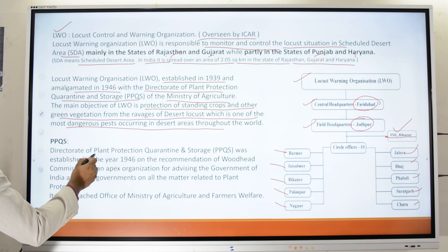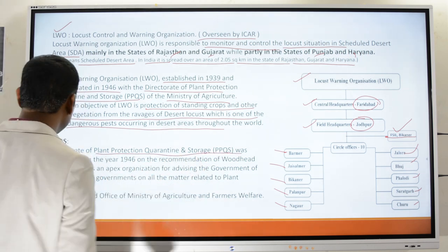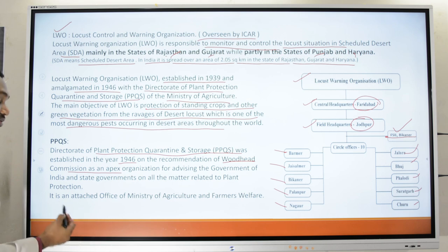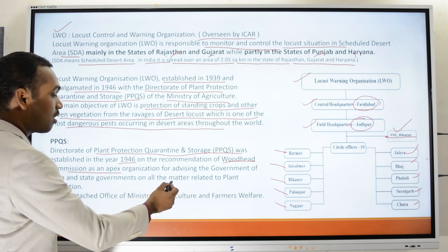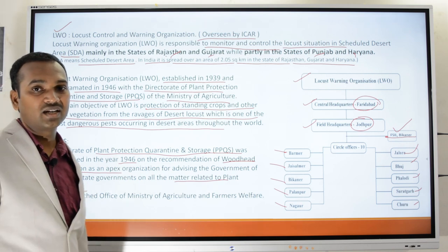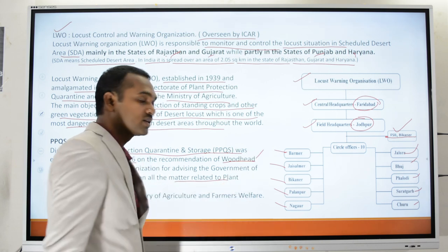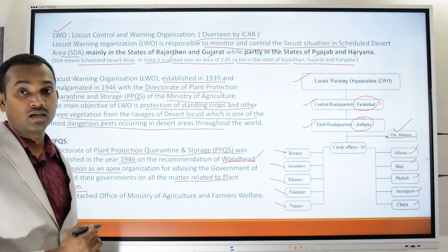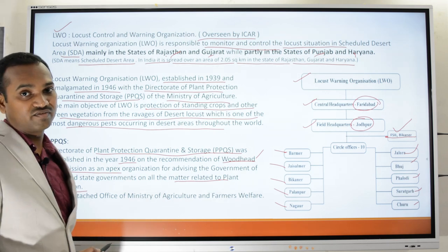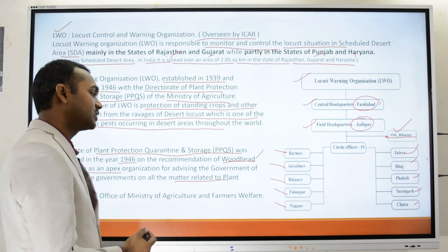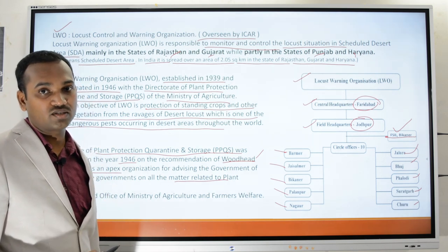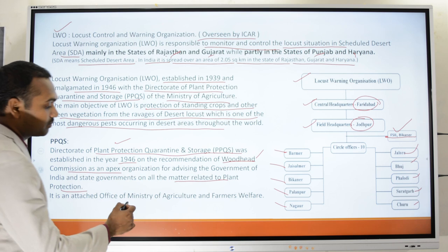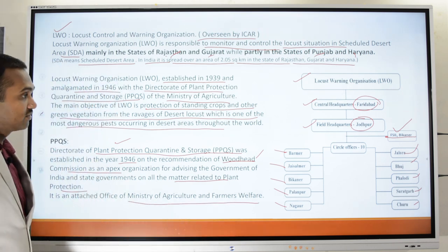The Directorate of Plant Protection, Quarantine and Storage (PPQS) was established in 1946 on the recommendation of the Woodhead Commission — a famine commission that identified the significant threat to food security from locusts — as an apex organization to advise the Government of India and state governments on all matters related to plant protection.